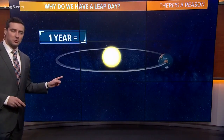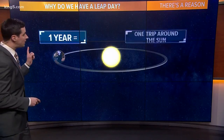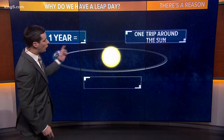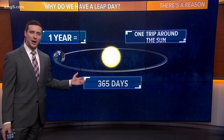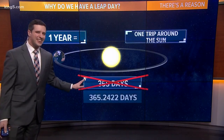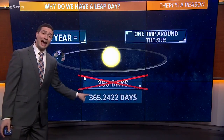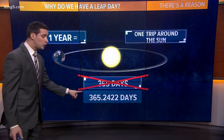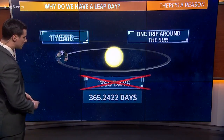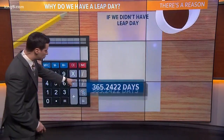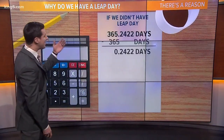Let's start with the basics. One year equals one trip around the sun equals 365 days, right? Not exactly. This is the actual number for how long it takes to make one revolution around the sun. So let's use this number.